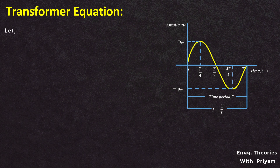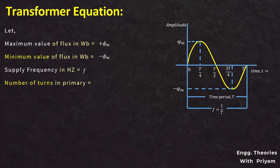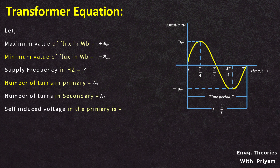The maximum value of the flux in Weber is equal to plus φm, and the minimum value is equal to minus φm. The supply voltage frequency in Hertz is equal to F, the number of turns in the primary is N1, the number of turns in the secondary is N2, the self-induced voltage in the primary is E1, and the mutually induced voltage in the secondary is E2.